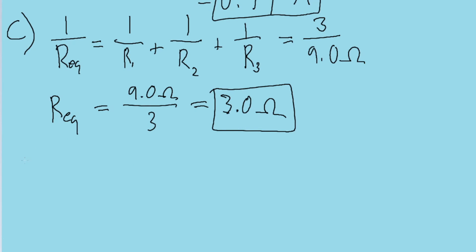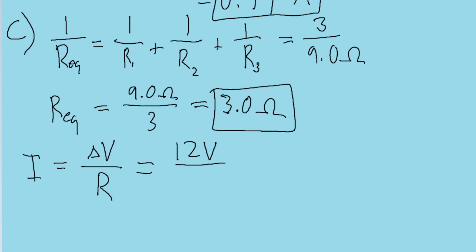Now for the parallel version of part B, we'll again use Ohm's law: current I equals delta V over resistance R. Because the circuit is in parallel, the voltage drop across each of the resistors is going to be the same. So we divide the total voltage of the battery by the resistance of just one of the resistors, 9 ohms — so 12 volts divided by 9 ohms. Putting that into the calculator, we find a current of about 1.3 amps.